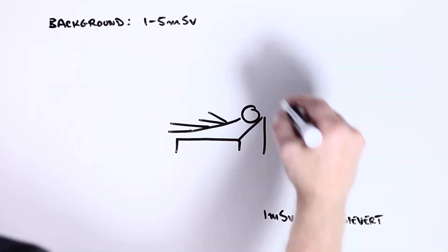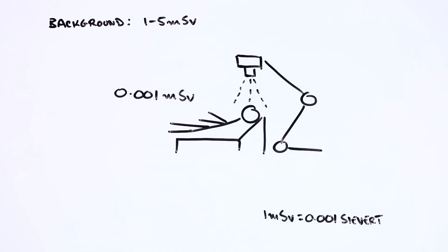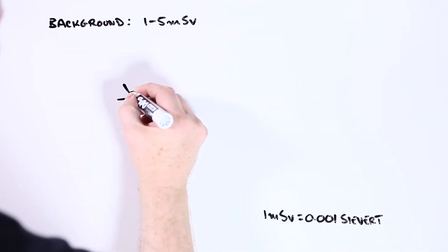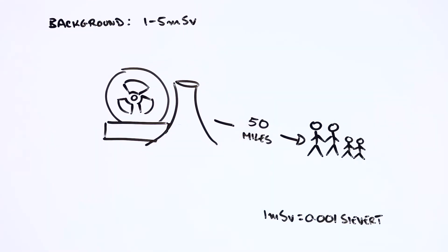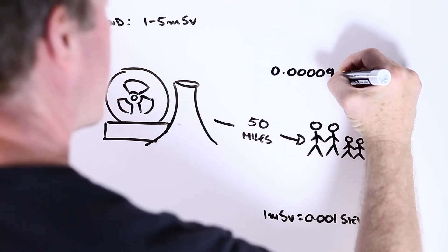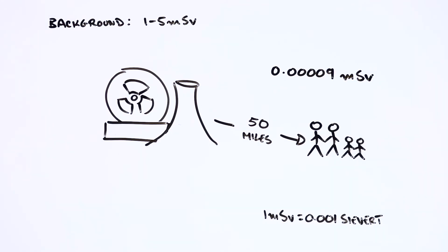A dental x-ray will expose you to something like ten millionths of a sievert. And if you live within 50 miles of a safely functioning nuclear power plant, you can expect to be exposed to a minuscule 90 billionths of a sievert, which coincidentally is less than if you're living the same distance from a coal-fired power plant.